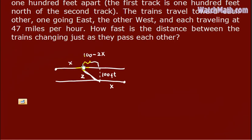Now, since x is in miles, actually we need to convert this into miles, but we don't really necessarily need that. We just put this as it is. So, now by Pythagorean, in this right triangle, we have z squared equals 100 minus 2x squared plus 100 feet.